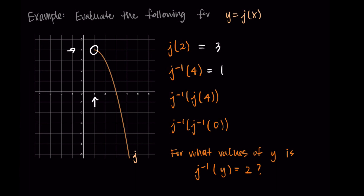For j inverse of 4: 4 is a y value, corresponding to x = 1, so j inverse(4) = 1. For j inverse of j(4): since inverses undo each other we expect 4 as the answer. Checking: j(4) gives y = −5, so j inverse(−5) asks for the x corresponding to y = −5, which is 4. So j inverse of j(4) = 4, as expected.